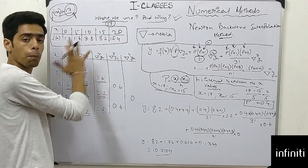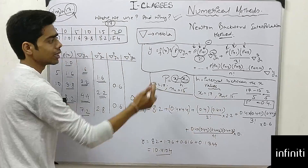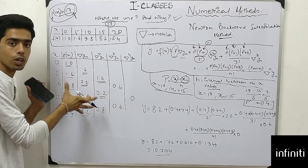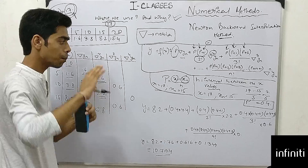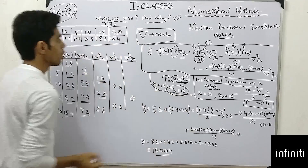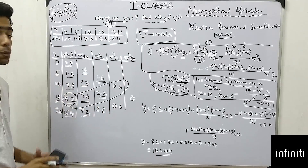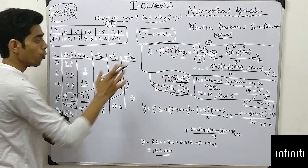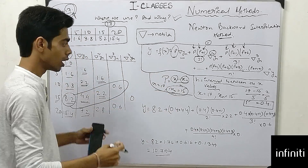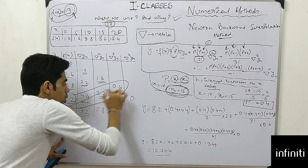Now, from the multiple values in the difference table, which values do we take? The value of x_n tells you which row to use. Since x_n = 15, locate 15 in the table. For Newton's Backward, take that row's value and the diagonal values going upward. So take Δy_n = 4.4, Δ²y_n = 2.2, Δ³y_n = 0.6.